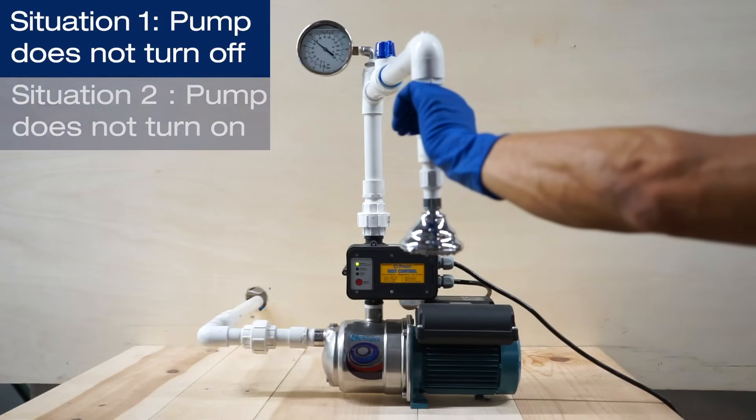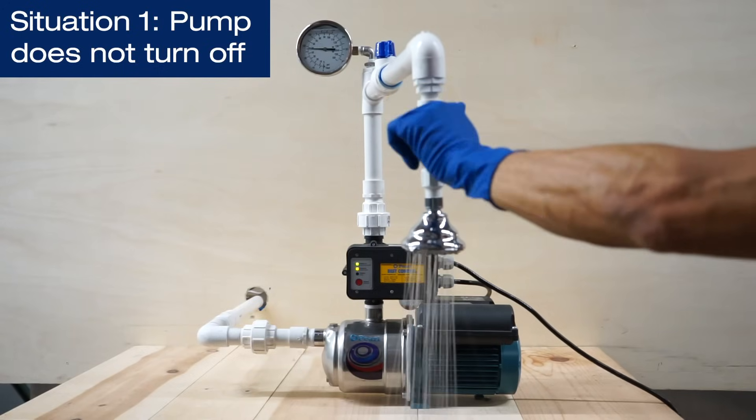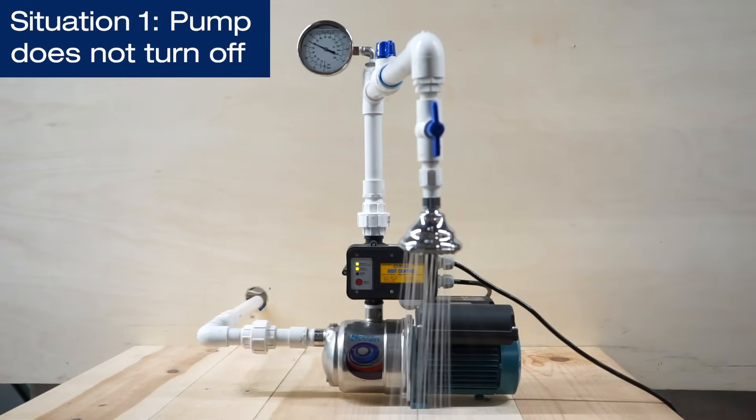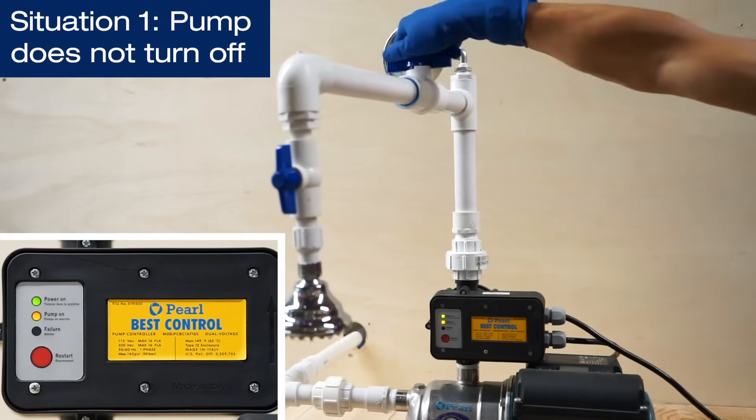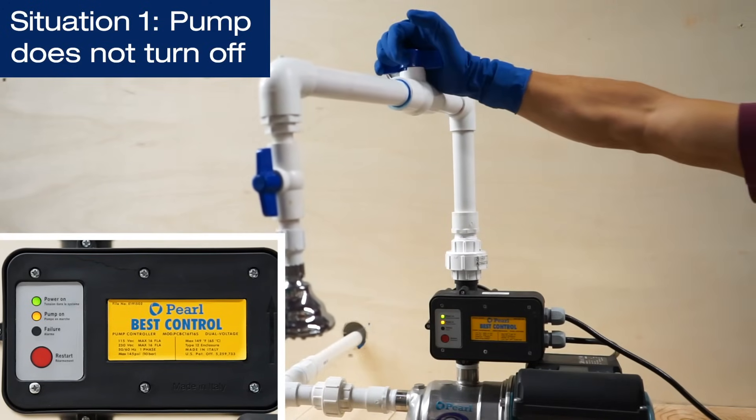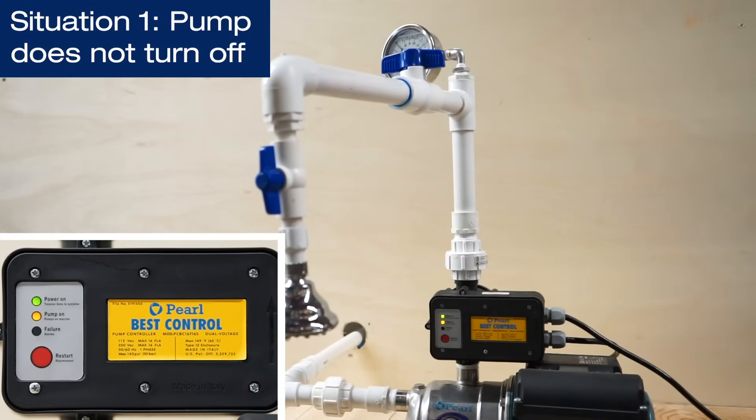For the first situation, in which the pump does not turn off, if there is a tap or faucet open and the system is working, then the pump should shut off just a few seconds after you close the ball valve. If this happens, the system is working perfectly, which means there might be a leak elsewhere in the installation.